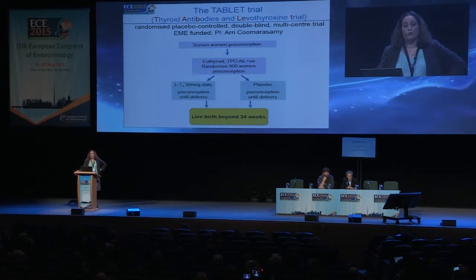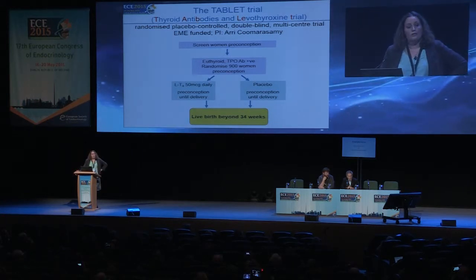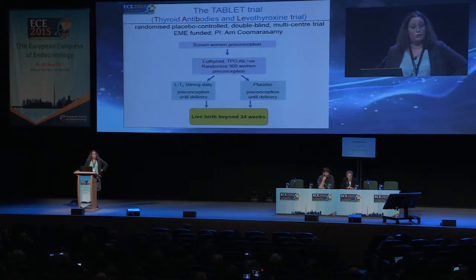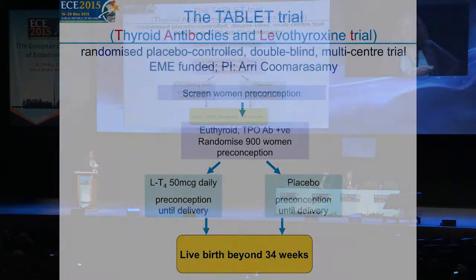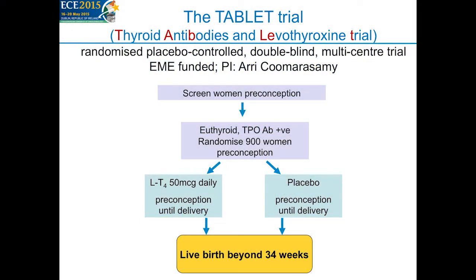To investigate this further, the TABLET trial is currently ongoing in the United Kingdom, where women are screened preconception. Those that are euthyroid and TPO antibody positive are randomized to receive either thyroxine or placebo, and our outcome is live birth at 34 weeks. We will be finishing recruitment at the end of this year.